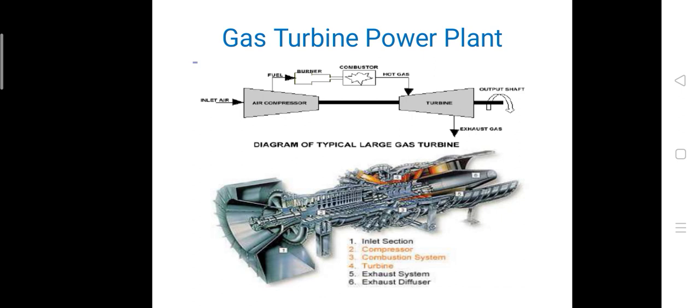The turbine rotates at very high speed and goes on to rotate the output shaft, which in turn rotates the generator. So we are going to get the power.